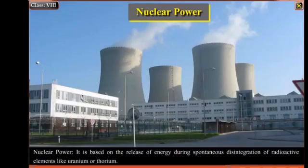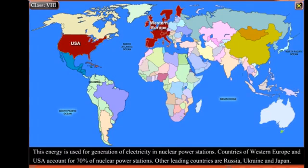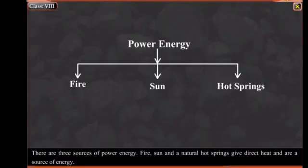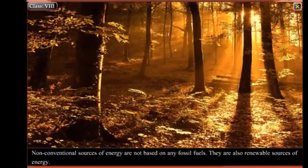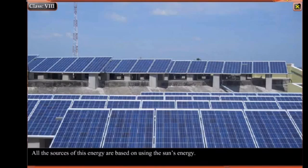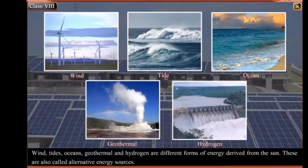Nuclear Power is based on the release of energy during spontaneous disintegration of radioactive elements like uranium or thorium. This energy is used for generation of electricity in nuclear power stations. Countries of Western Europe and USA account for 70% of nuclear power stations. Other leading countries are Russia, Ukraine, and Japan. Natural hot springs give non-conventional sources of energy. Non-conventional sources of energy are not based on any fossil fuels; they are renewable and based on using the sun's energy. Wind, tides, oceans, geothermal, and hydrogen are different forms of energy derived from the sun, also called alternative energy sources.